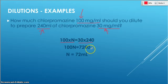30 times 240 is 7,200. And now I'm just going to divide both sides by 100, just like I do any other time. To get rid of that number, I have to divide by whatever's with the letter. So dividing both sides by 100, 7,200 divided by 100 is going to give me 72 milliliters. So that means I'm going to start off with 72 milliliters of chlorpromazine.